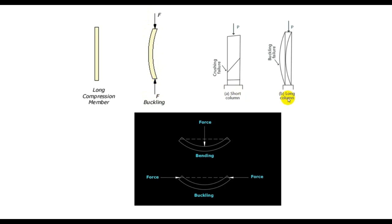For columns, two types of failure occur: first, crushing, and second, buckling. Buckling failure occurs in long columns, and crushing failure occurs in short columns. Many civil engineers have confusion about short columns and long columns. In my previous video I have discussed that topic — you will find the playlist at the end of that video under 'Civil Engineering Basic Knowledge,' which includes solved problems about short and long columns.